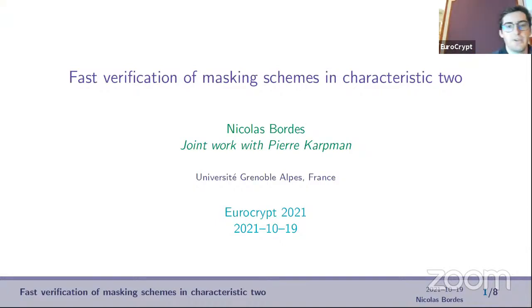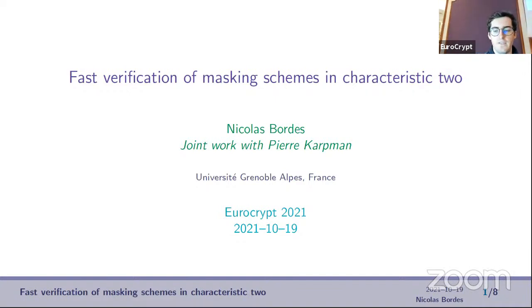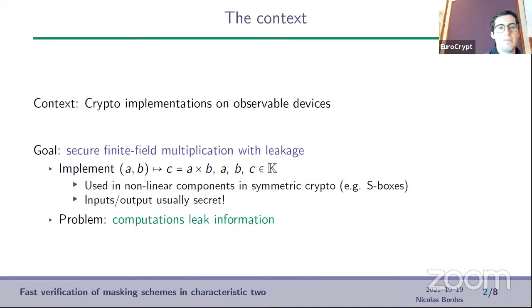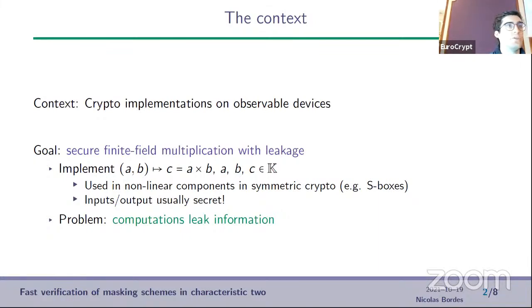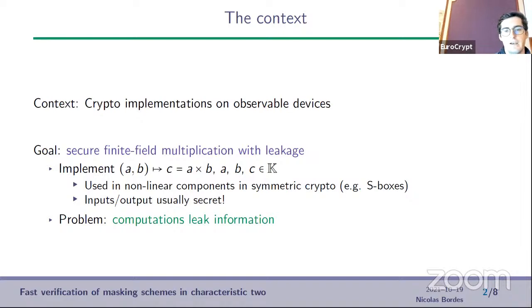This talk, joint work with Pierre Karpman, is about fast verification of masking schemes in characteristic two. The context: we want to make crypto implementations on observable devices secure, specifically performing finite field multiplication on a device that leaks information. This operation is often used in non-linear components in cryptography, for example in S-boxes where inputs and outputs are usually secret. The goal is to protect implementations when an attacker can read information via side channels.